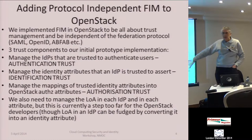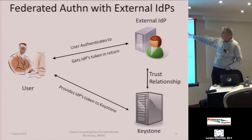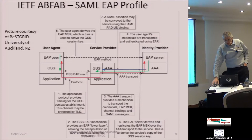We also wanted to manage Level of Assurance (LOA), but that concept was just too far out for the OpenStack people to grasp. We can handle it by sticking it as an attribute in the SAML assertion. So the user authenticates to the IDP, gets a token, gives the token to Keystone, Keystone turns the token into its own token, and off you go.